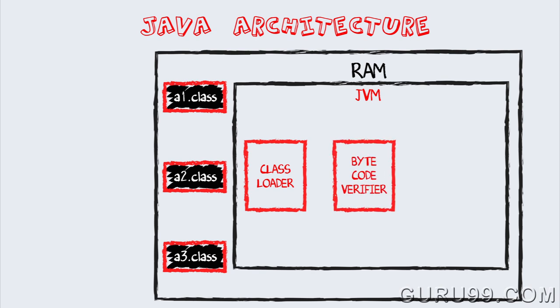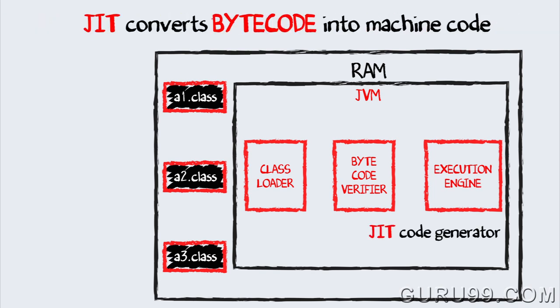The bytecode is verified for any security breaches by the bytecode verifier. Next, the execution engine will convert the bytecode into native machine code. This is just-in-time compiling.